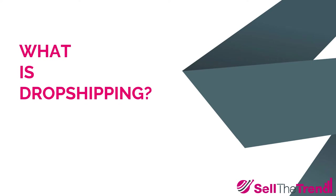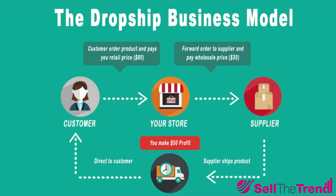So let's take a look at this model in detail. Here is the entire life cycle of a dropshipping transaction. In the middle, you have your online store. We are going to show you in a future video how to exactly open a store, set it up correctly, and stock it with money-making winning products from Sell the Trend. On the left, you have your customer. They will arrive at your online store and make a purchase of one of the products you have and pay you full retail price. In this example, let's say it's $80.